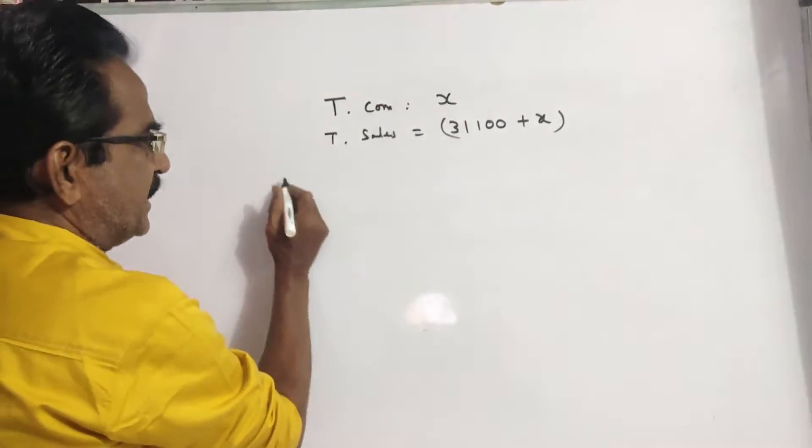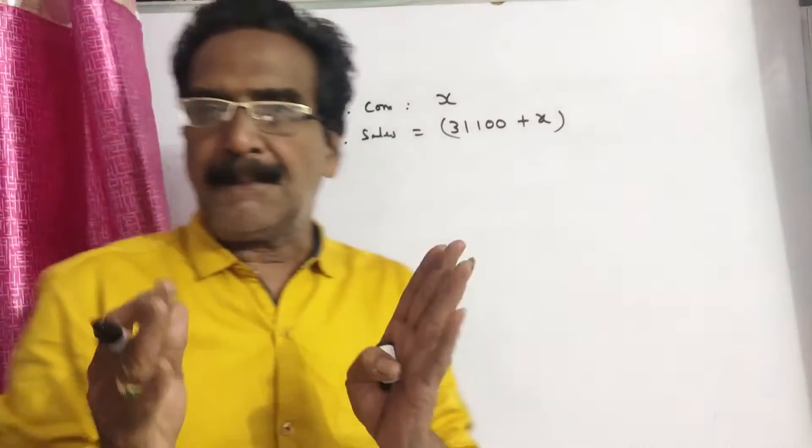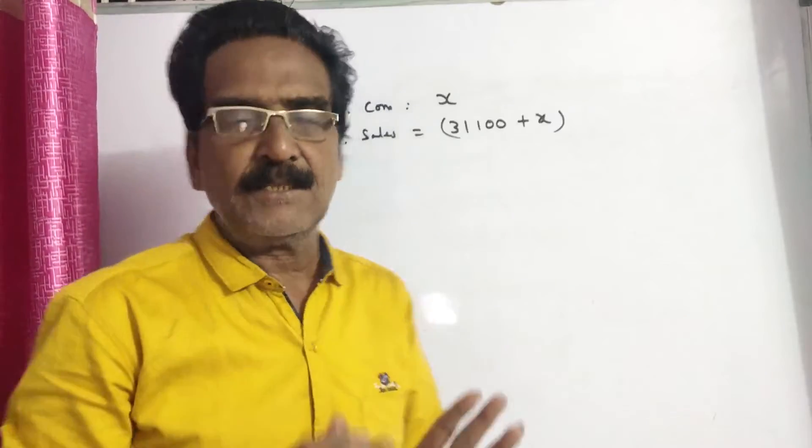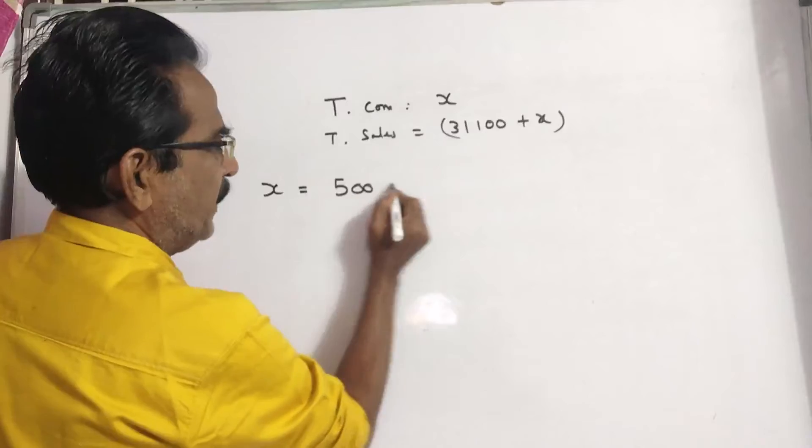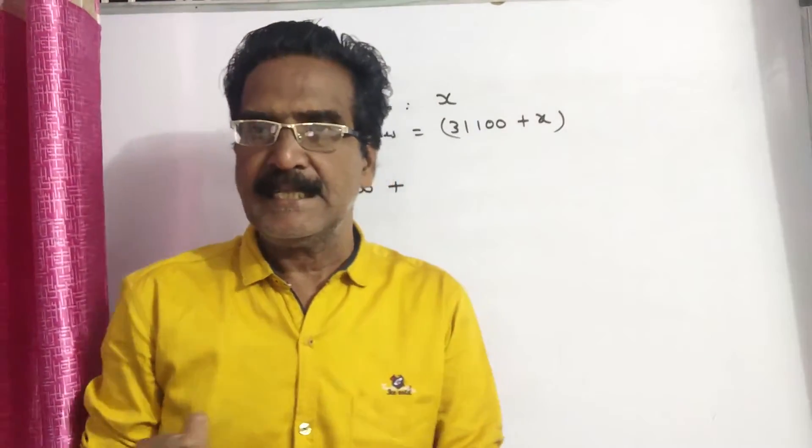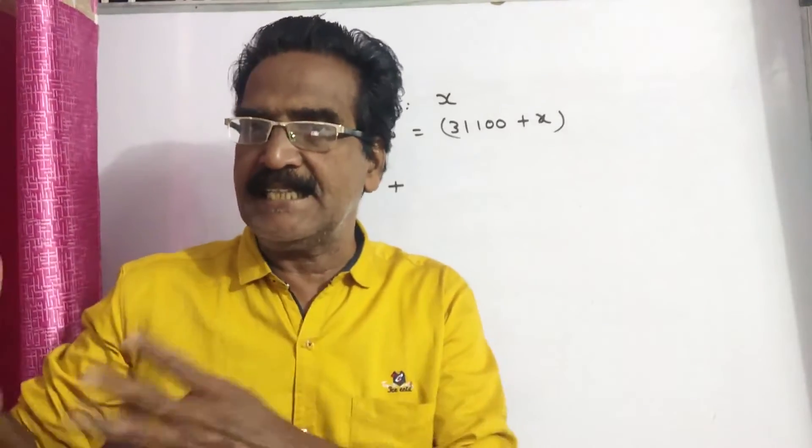Now, the total commission X is equal to: Up to 10,000, he gets a commission of 5%. So, 5% of 10,000 means 500 plus he gets a commission of 4% on all sales exceeding 10,000.